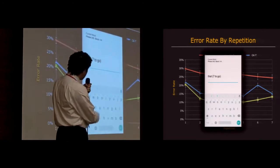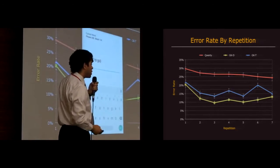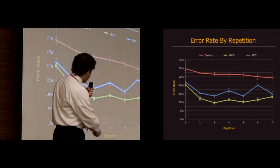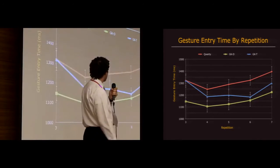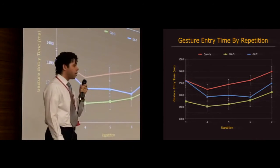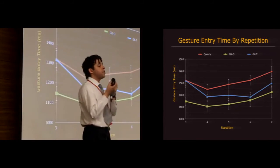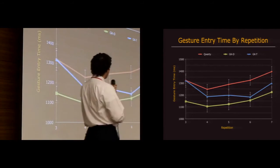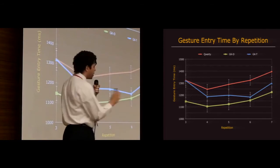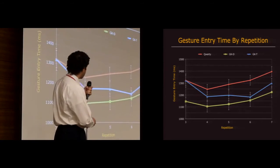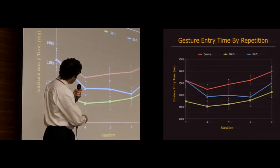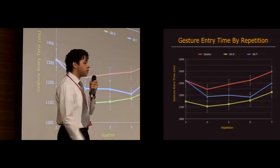So now with regards to speed, we also found that including speed as an optimization parameter led to faster gestures as well, shorter and faster gestures. So the double optimized layout, for example, is 10% faster than QWERTY.